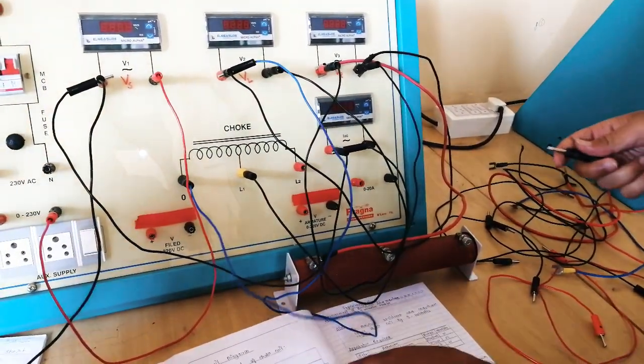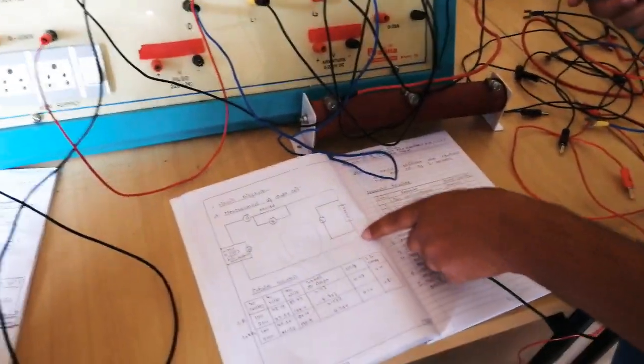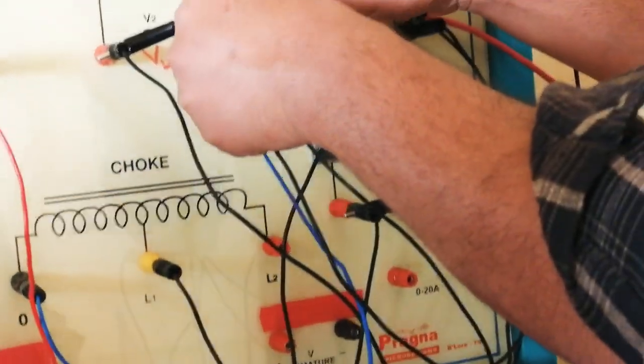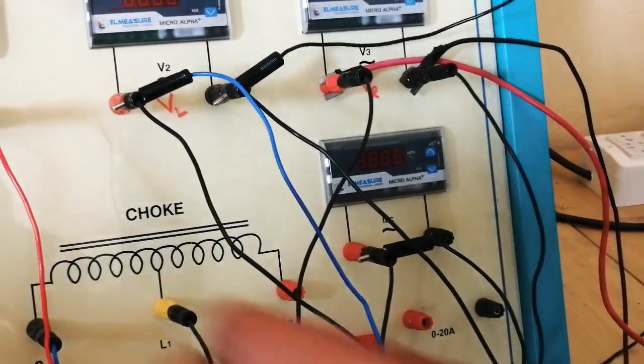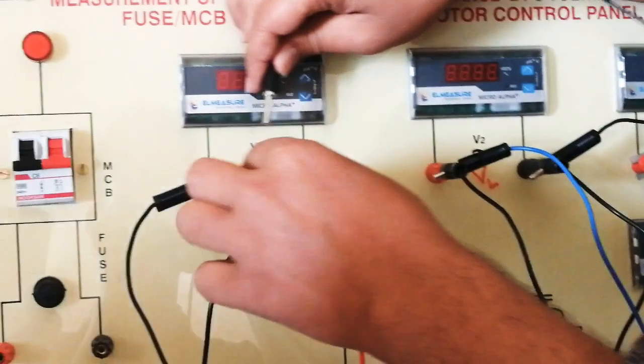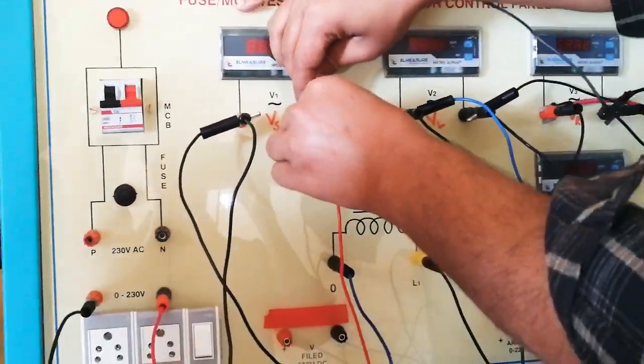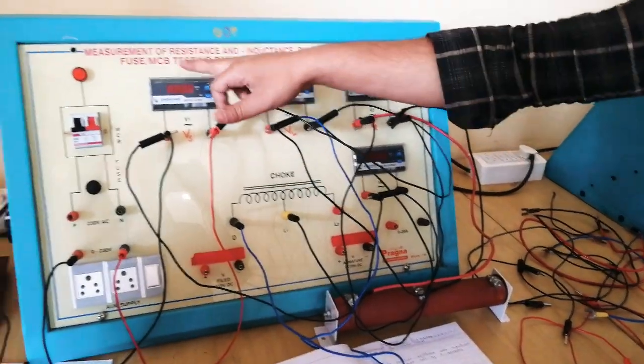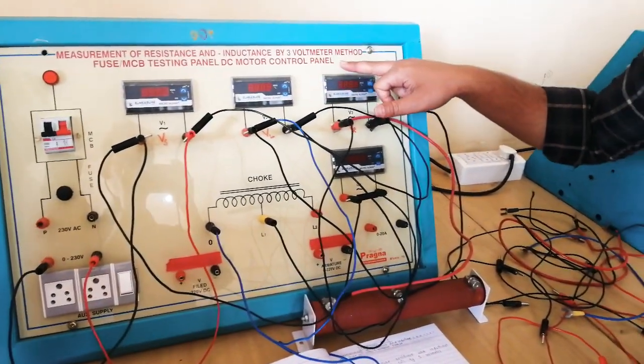This is my real coil negative. VS positive to VS negative. So this is all my circuit for measurement of resistance and impedance by the 3 volt meter.